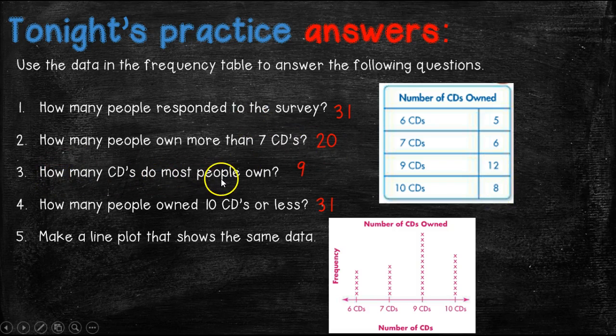This question says, how many CDs do most people own? So here we're looking, what is the largest number in this column? And the answer would be 9. They own 9. Most people own 9 CDs. How many people owned 10 CDs or less? Well, 10 or less would count for everything. So we know it would be 31.